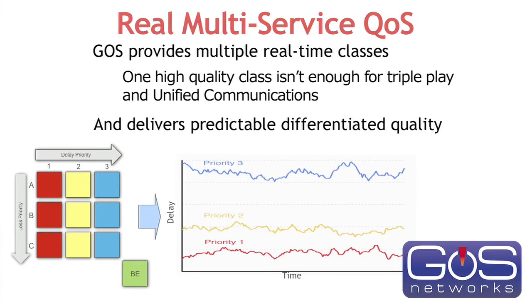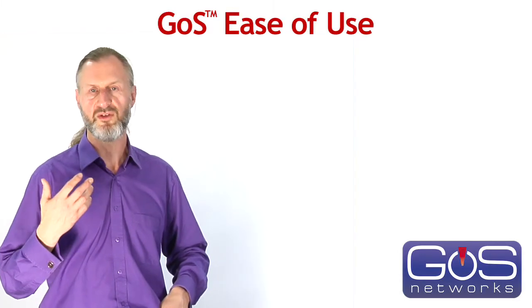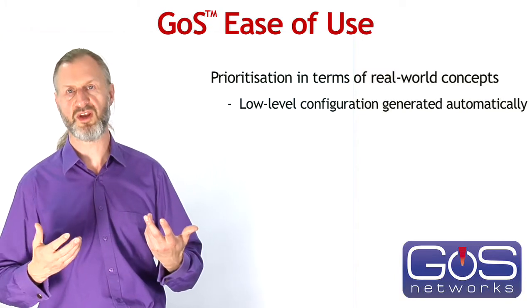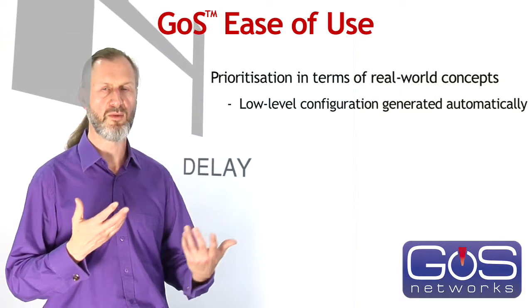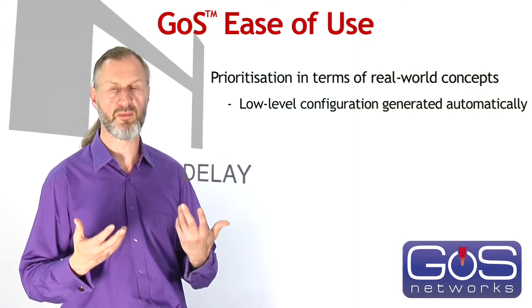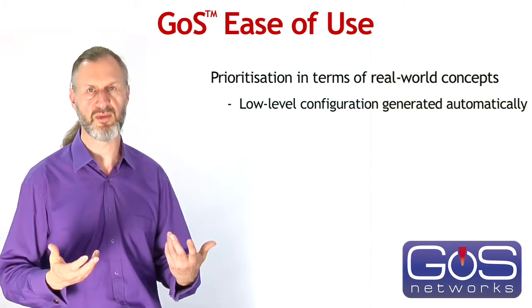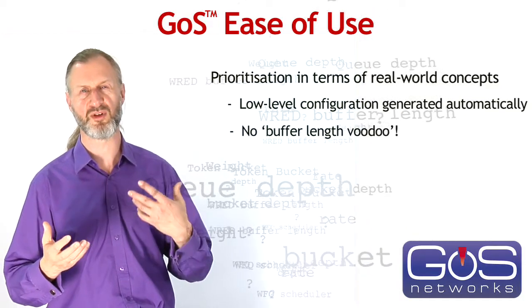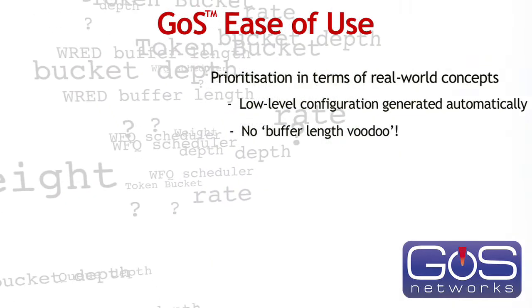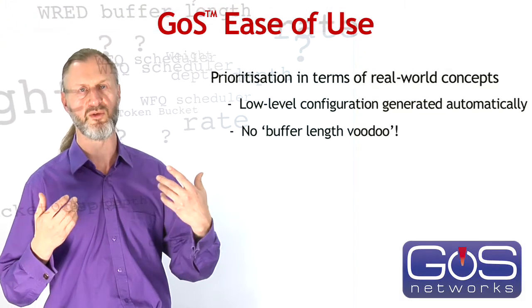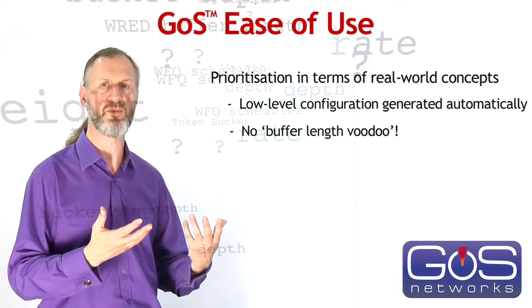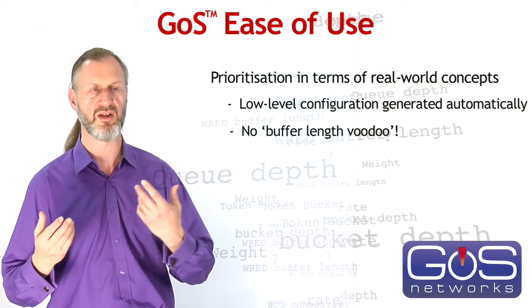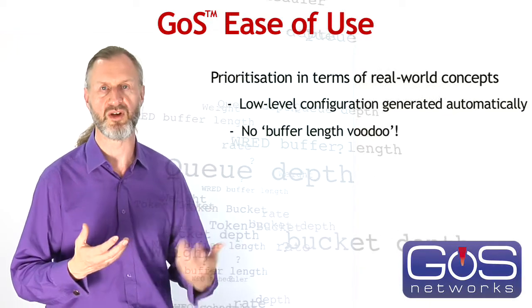It's when the network performance varies that the application struggles. GOSS is a very easy-to-use technology. It allows prioritization in terms of real-world concepts of bandwidth, loss, and delay, and all the low-level parameters involved are generated automatically because GOSS is based on an underlying mathematical analysis. This is in contrast with other mechanisms which are almost like voodoo — you have to come up with parameters for buffer length, scheduler weights, and a whole series of parameters which have no direct correlation with how streams of traffic are actually treated, and certainly no correlation with how they're all treated when running simultaneously.